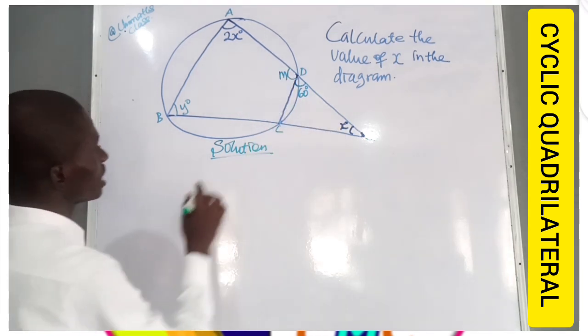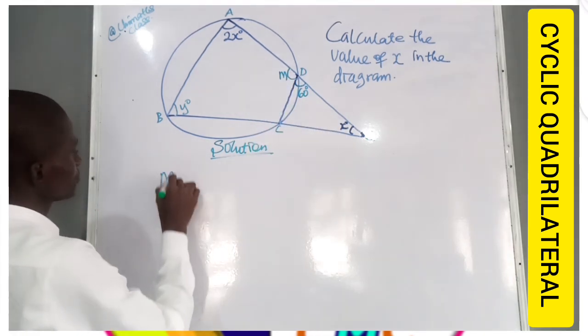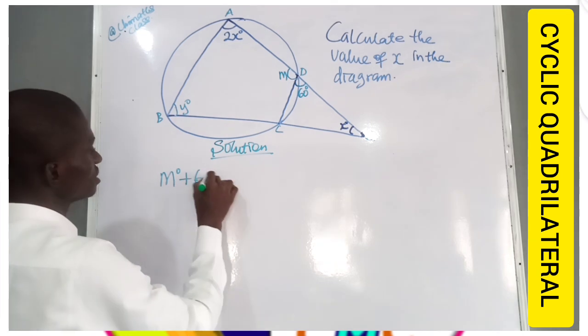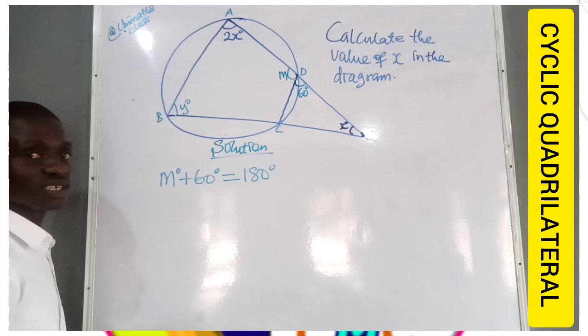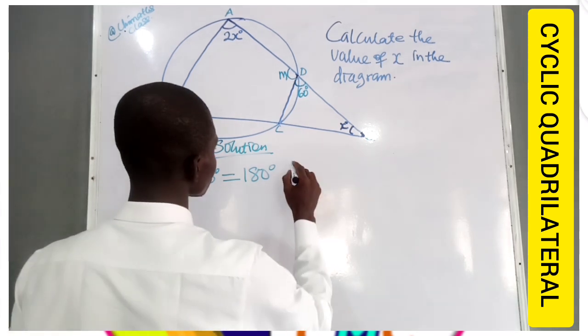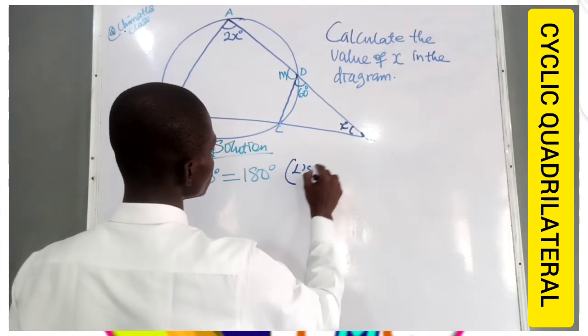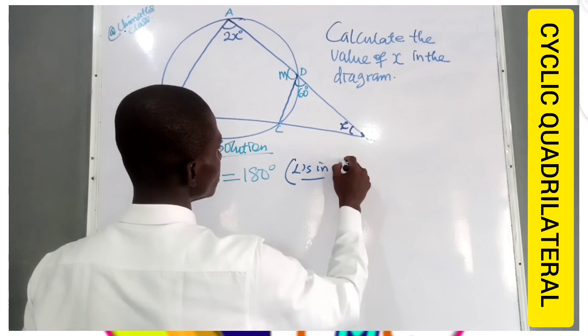Now, from angles in a straight line, we can say that M degrees plus 60 degrees should give us 180 degrees. And our reason is angles in a straight line.